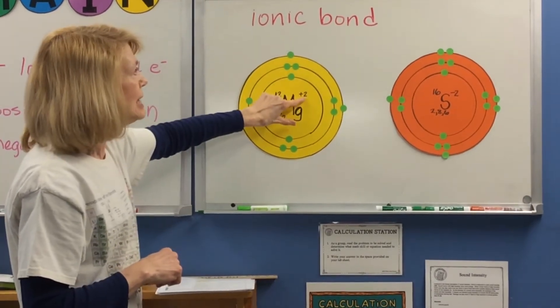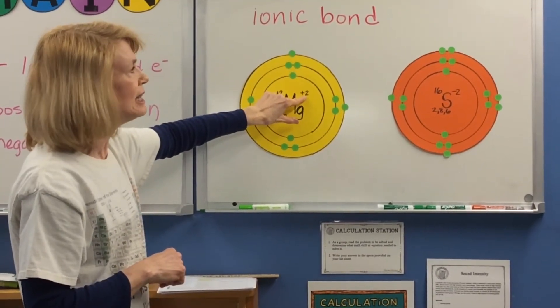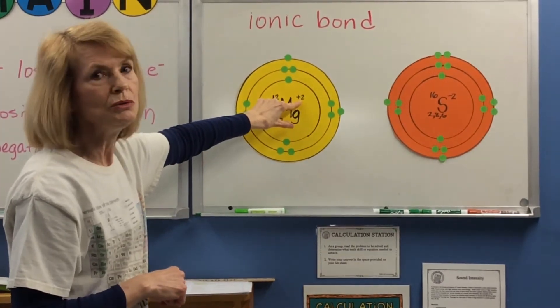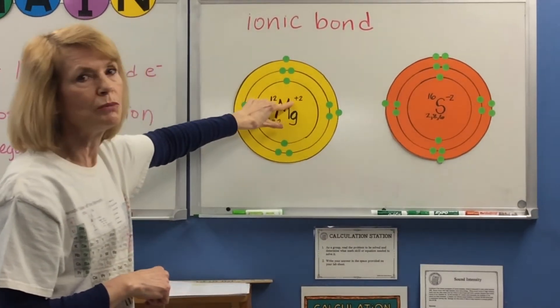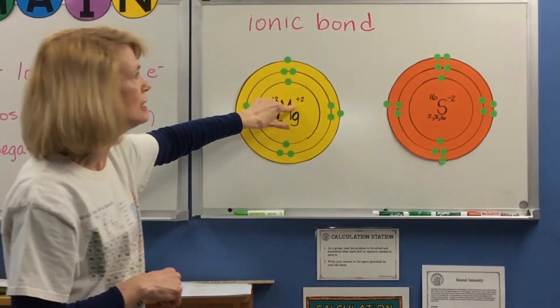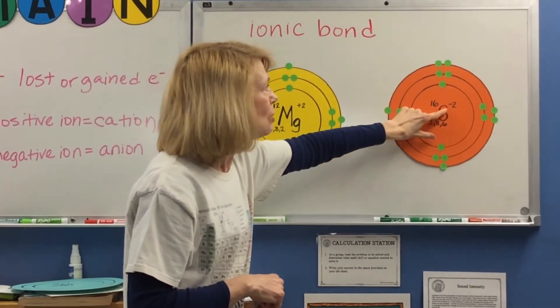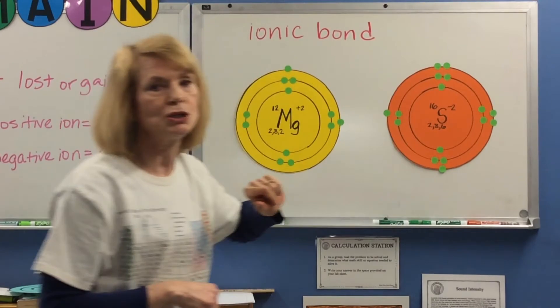Magnesium has a valence of plus 2, or it has two extra electrons. And sulfur has a valence of minus 2.